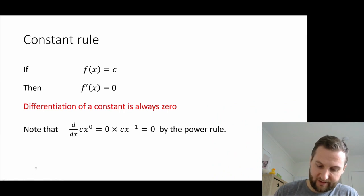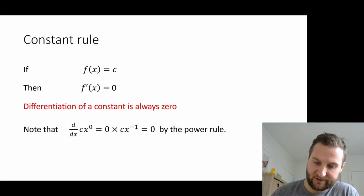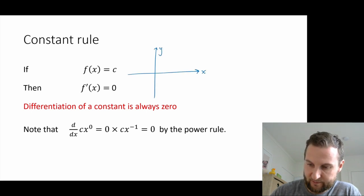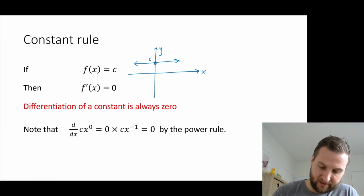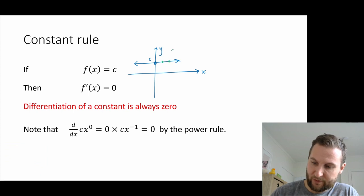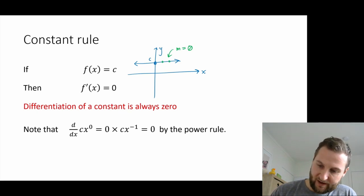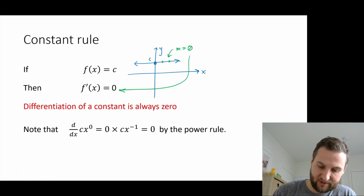The first one I want to talk about is the constant rule, which tells us the derivative of a constant function. If f(x) equals c, then the derivative is zero. If we plot f(x) equals c, we get a horizontal flat line, and the slope of any two points on that line is always zero. So any constant always differentiates to zero.